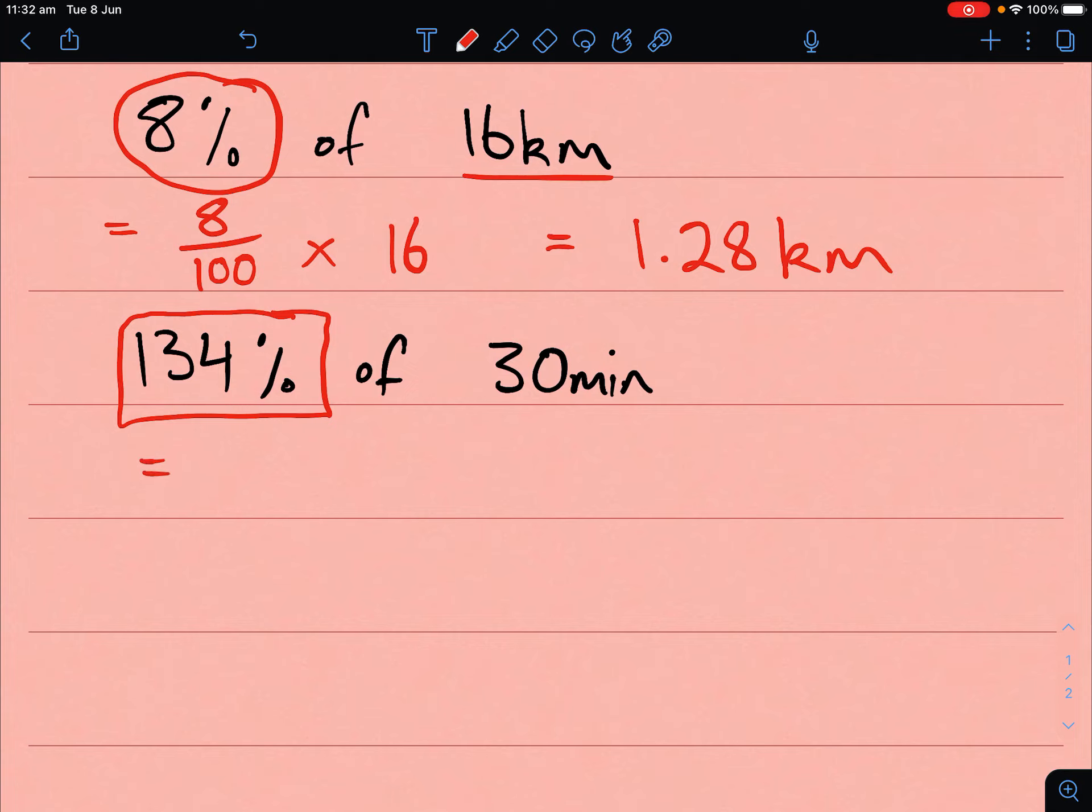We do the same thing - we change this into a decimal. We'd write that as 1.34 and then multiply that by 30. We get an answer of 40.2, and again that would be in minutes because our original measurement was in minutes.